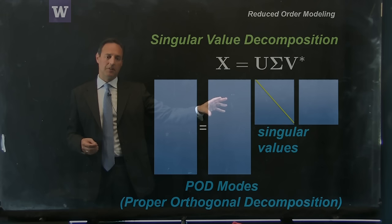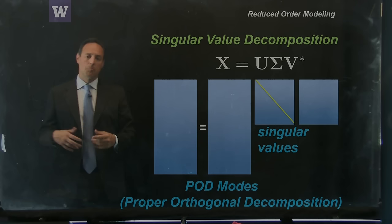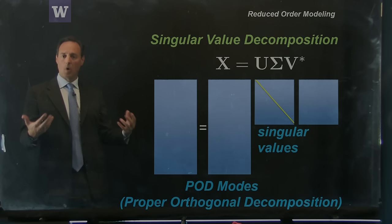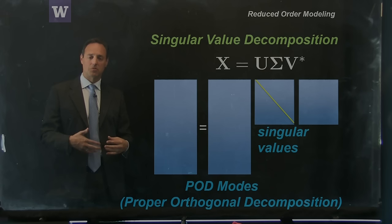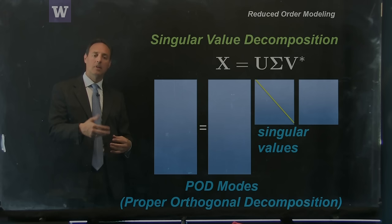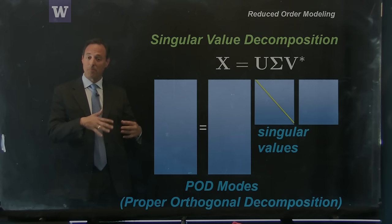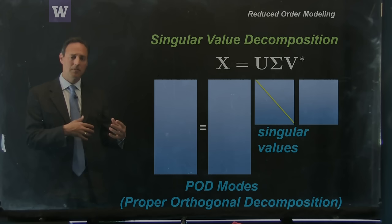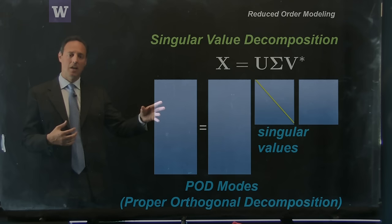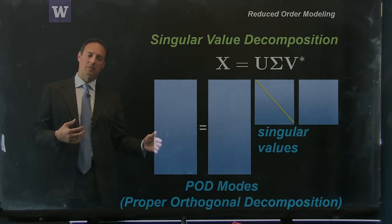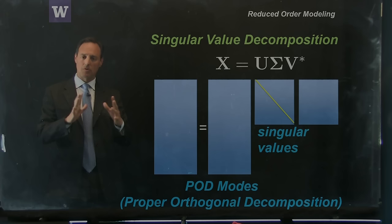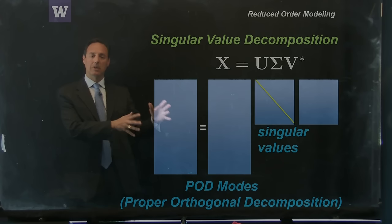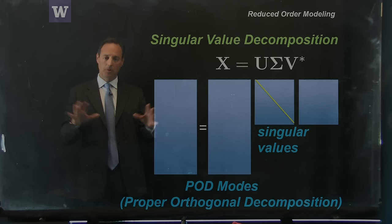The modes that come out of the SVD are often called POD modes — proper orthogonal decomposition. People have also used other terminology: the Hotelling transformation, Karhunen-Loève modes or analysis, and empirical orthogonal functions. It is also very closely related to principal component analysis. The only difference between PCA and those other terms is that for PCA you mean-subtract and set the variance to one for each row, so every row has mean zero and unit variance. POD, SVD, EOFs, and Karhunen-Loève don't necessarily enforce that normalization, but they are really all the same — they are the SVD.